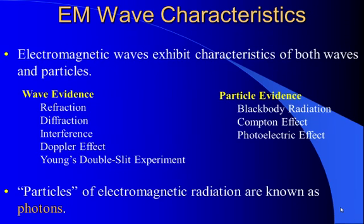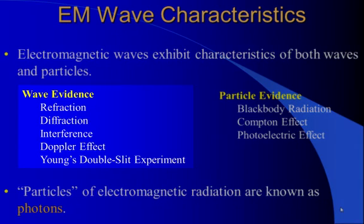Electromagnetic waves exhibit characteristics of both waves and particles. Things like light is both a wave and a particle, and depending on the situation it acts more like a wave or more like a particle.